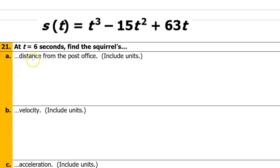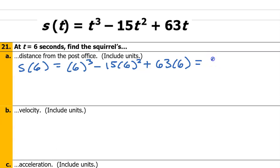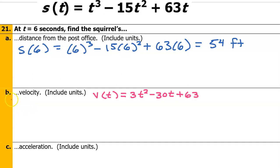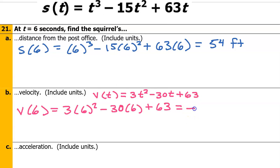Number 21, Part A: at t equals 6 seconds, find the squirrel's distance from the post office. Using the distance formula, s(6) turns out to be 54 feet. For Part B, we need to find the velocity at t equals 6 seconds. Using the velocity formula from problem 14, the velocity at 6 seconds turns out to be negative 9 feet per second.